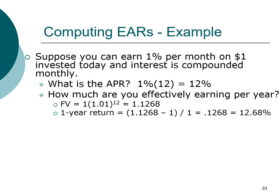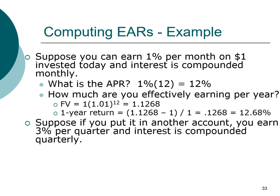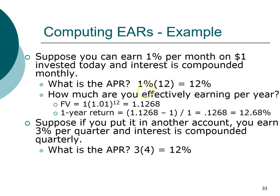Now let's look at another example. Pause the video and see if you can find out how much you will earn on a similar account. In this case, you're investing at 3% per quarter, and interest is compounded on a quarterly basis. On an APR basis, they are the same: 1% per month for 12 months gives 12%, and 3% per quarter for four quarters per year also gives 12%. But would you end up with the same amount of money at the end of one year?